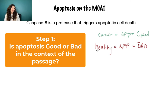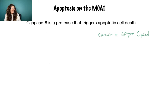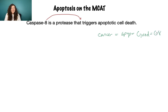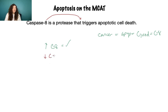Let's say this passage is about cancer. That means apoptosis is good. And since caspase 8 triggers apoptosis, C8 functioning is a good thing — it's what we're looking for to treat this cancer. So anything that increases the function of C8 is good, and anything that decreases the function of caspase 8 or inhibits it would be bad. That's how we set it up.